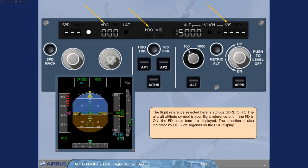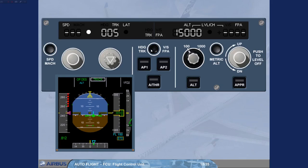Changing the reference: the selected flight reference is now the flight path vector, bird on. The bird symbol is your flight reference and materializes the aircraft's current trajectory. If the flight director is on, the flight director flight path director FPD is displayed. The selection is now indicated by track flight path angle legends on the FCU display.